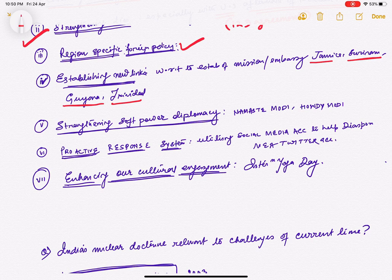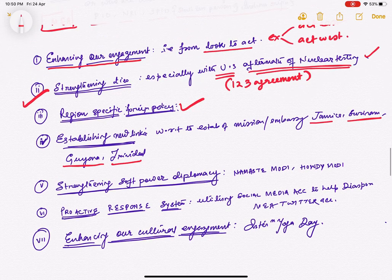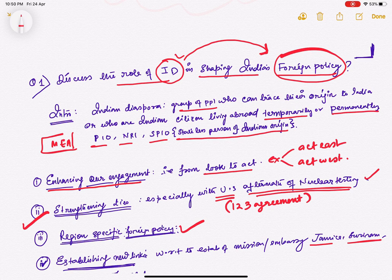Next, enhancing our cultural engagement. For example, International Yoga Day. We have 25 million Indian diaspora spread across the world. When we are promoting yoga, we are promoting our engagement through culture. Hence, enhancing our cultural engagement—our foreign policy is being engaged through culture. The conclusion from this: the Indian diaspora's impact on foreign policy has been significant. Simple conclusion. Give the definition of Indian diaspora, then the role of Indian diaspora in Indian foreign policy, expand the seven points, and it's done.